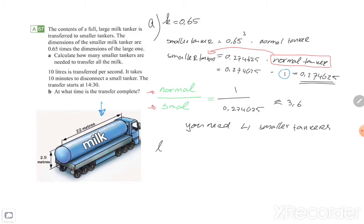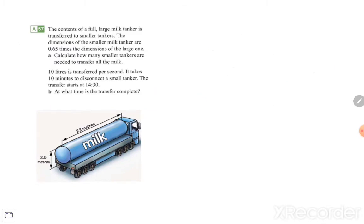Let me go on with exercise B. 10 liters is transferred per second. It takes 10 minutes to disconnect a small tanker. So the transfer starts at 14:30. So to disconnect the small tanker, we start with the big one. The big one goes to a small one. So that's the first 10 minutes.